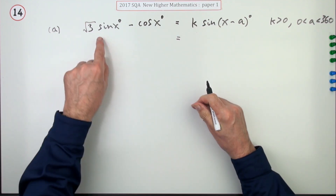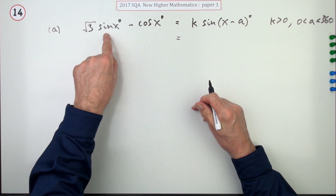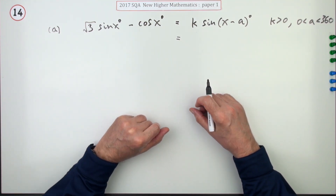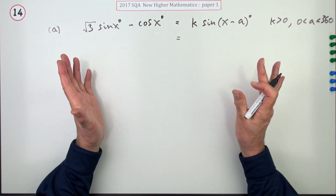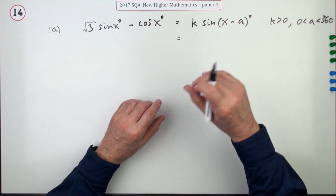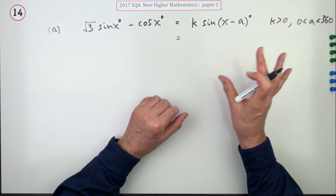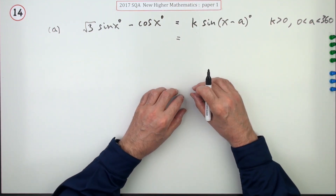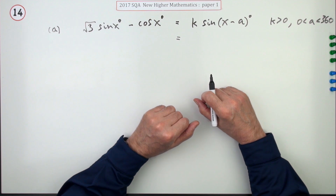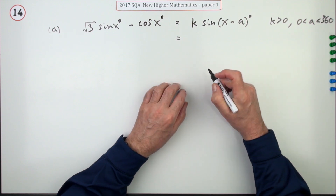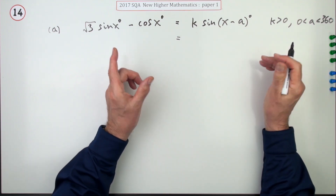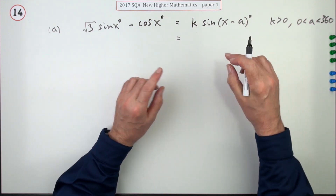Whereas there is an extremely simple way to resolve that into a single trig term using phasors, you can't do that here — not that they say anywhere 'do not use this,' but they want you to use the expansion and go through the algebra. The first mark is for expanding this, and you have to do it that way and it has to be stated.